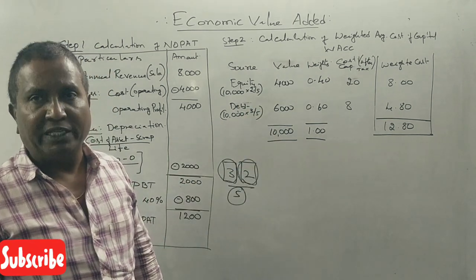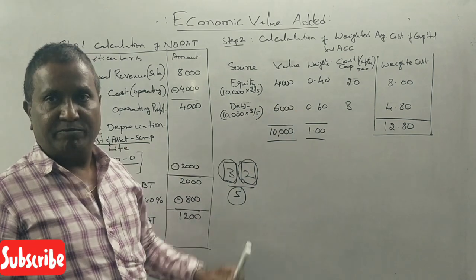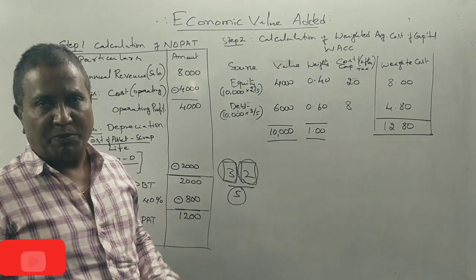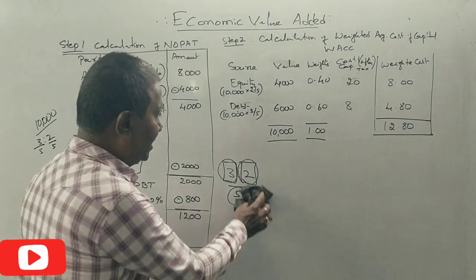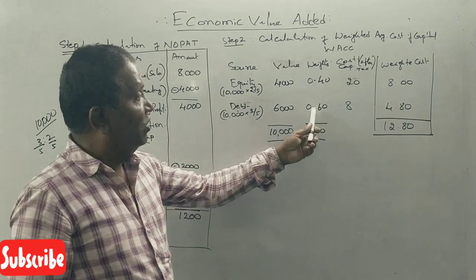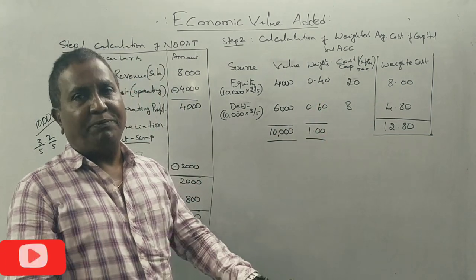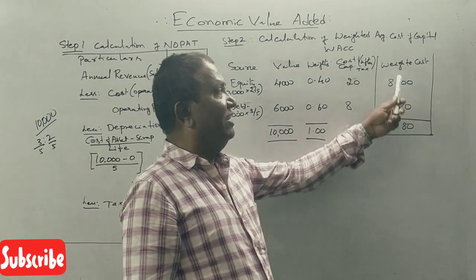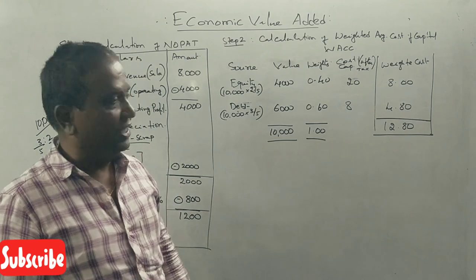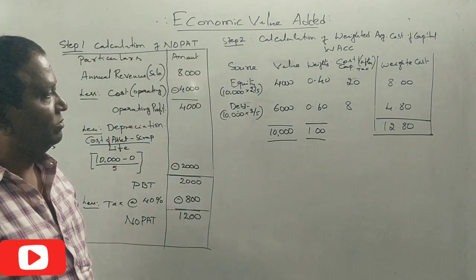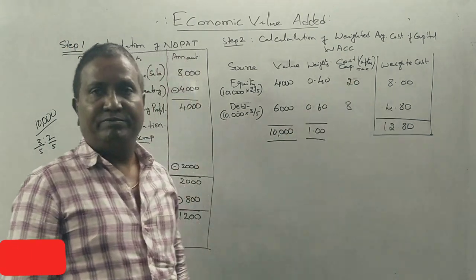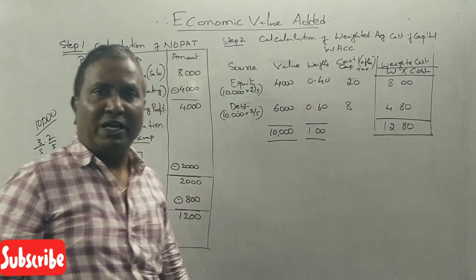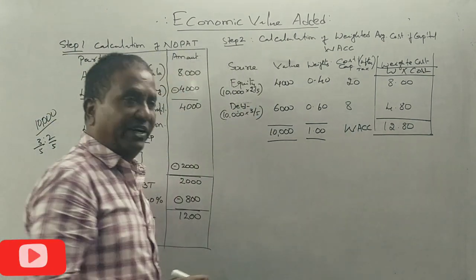Debt is 4,000 divided by 10,000 equals 0.4. Equity is 6,000 divided by 10,000 equals 0.6. These are proportions, not percentages. Weighted cost of debt is 0.4 into 8 equals 3.2. Weighted cost of equity is 0.6 into 20 equals 12. Total WACC equals 12.8%. Weights into cost gives the weighted average cost of capital.